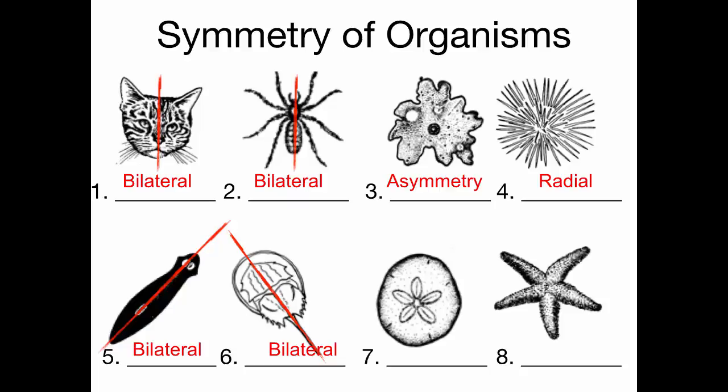The sand dollar has radial symmetry, not bilateral — it's a circular pattern where you can draw several lines putting it into equal parts. And the starfish has radial symmetry, because those arms are like spokes coming out of a wheel in a circular pattern. You can split it multiple ways and always have two equal halves, which is a sign of radial symmetry. With bilateral organisms, you can only draw a line one way to have two equal sides.